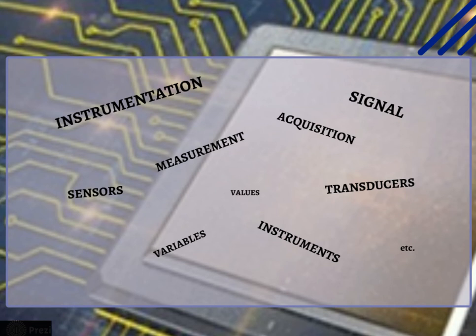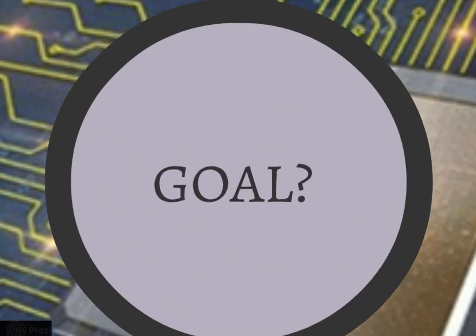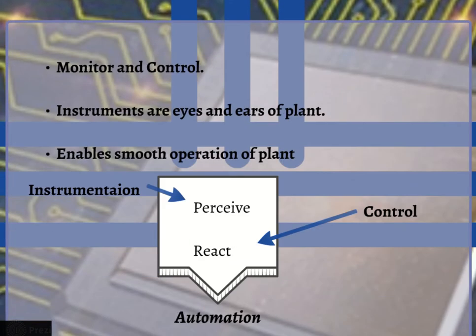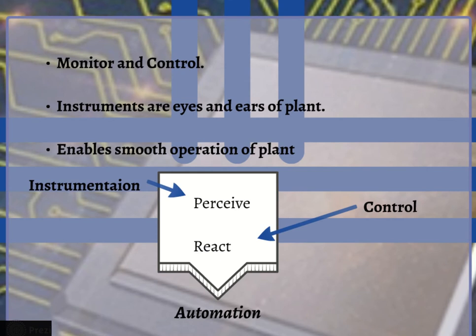So what do you think all these terms lead to, or what is the ultimate goal of studying all this? When you study this, you eventually want to monitor and control variables or automate a process. In other words, instruments are the eyes and ears of the plant where they monitor conditions — the variables which are to be controlled — thus enabling the smooth operation of the plant.